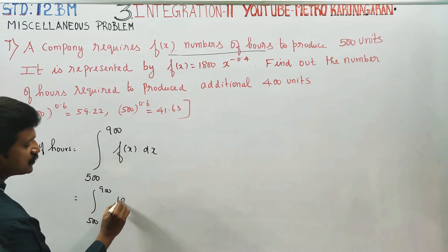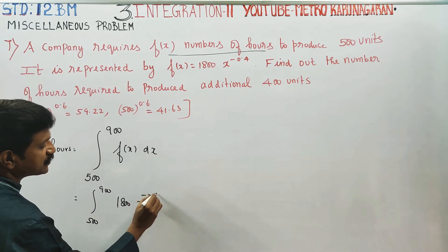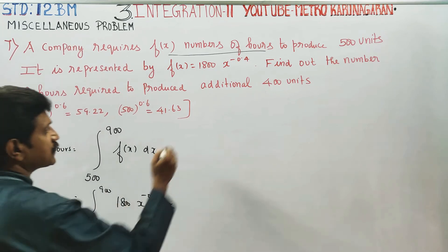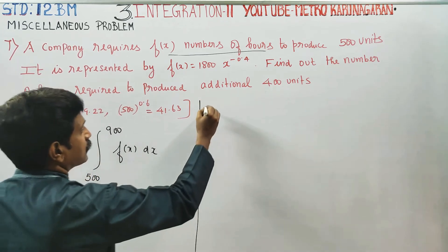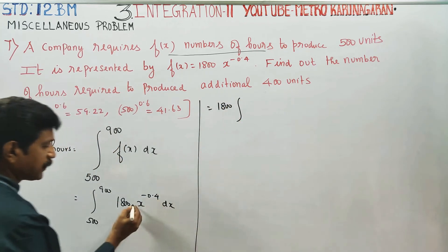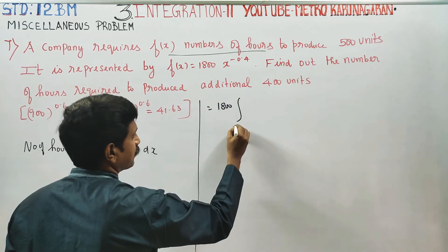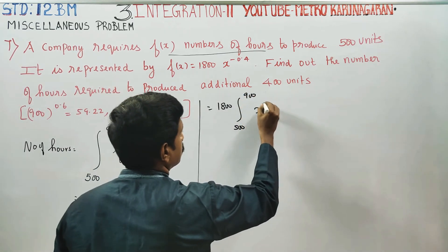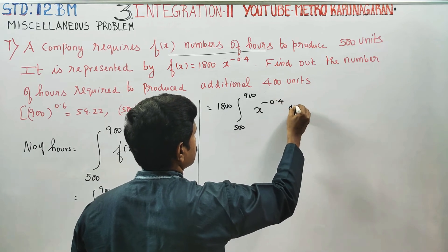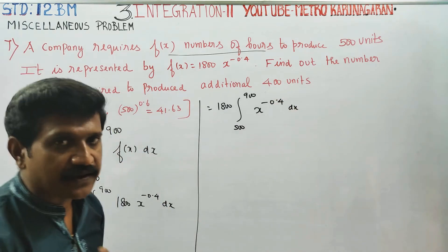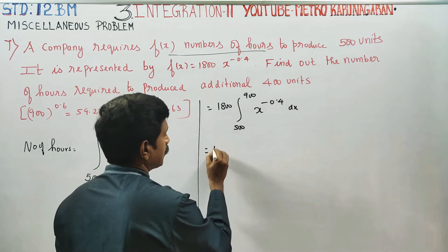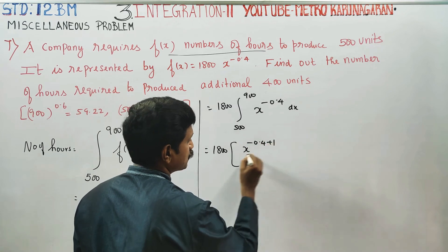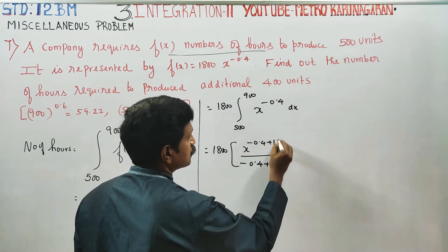f(x) is 1800 x to the power minus 0.4 dx. Integration of 500 to 900 of x to the power minus 0.4 dx. Applying the integration formula: minus 0.4 plus 1 gives the exponent 0.6, with limits 500 to 900.